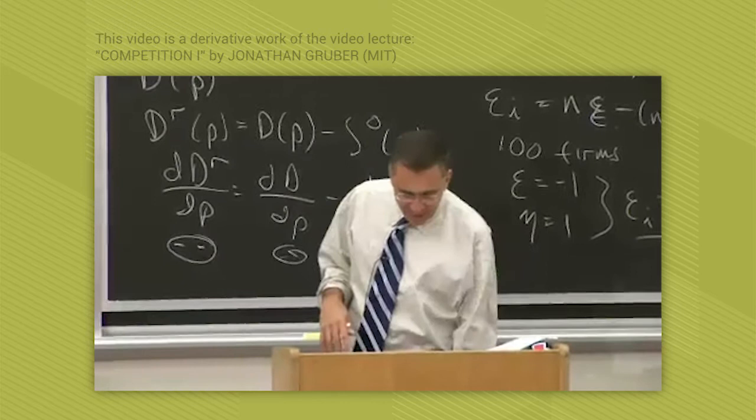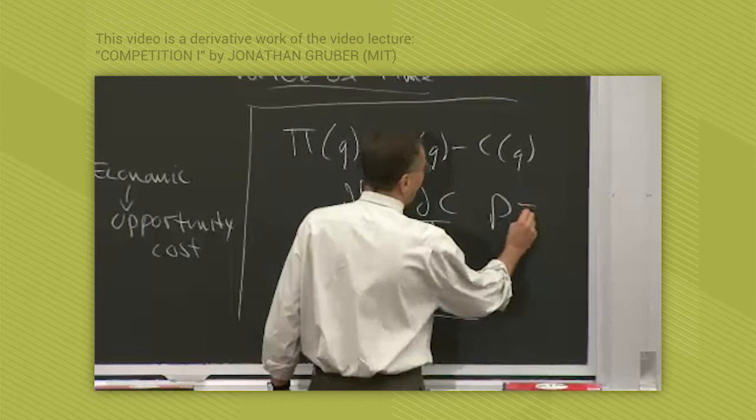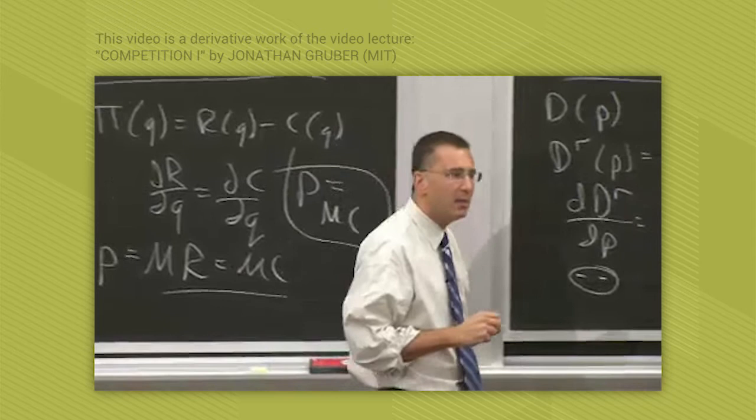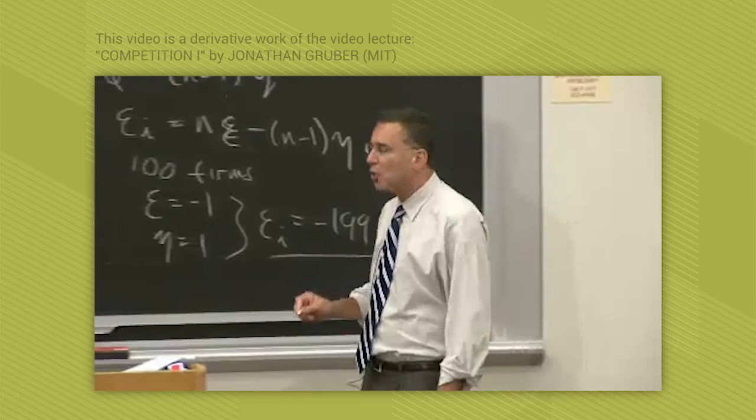Memorize it. Put it under your pillow. In a competitive market, price equals marginal cost is the profit maximizing condition. You will produce until the marginal cost of producing the next unit is equal to the price you can sell that unit for in the market.